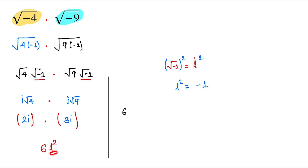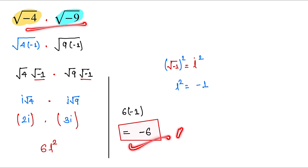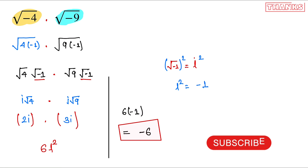Now we put this value in: 6 into minus 1, since the value of i squared is minus 1. So this is equal to minus 6, and this is our final answer for this given question.